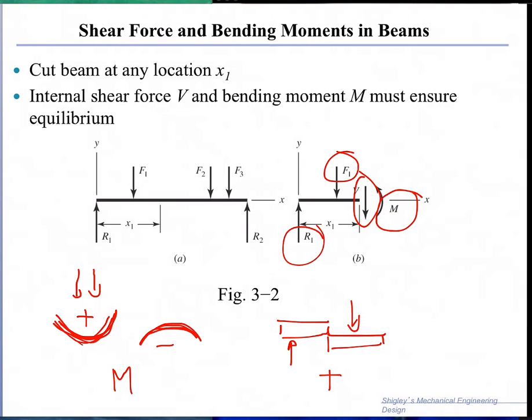So the beam just splits like this when you cut it virtually. Then this way is negative. So these are the conventions.